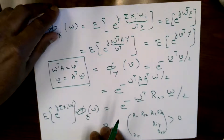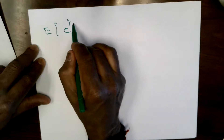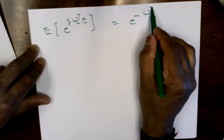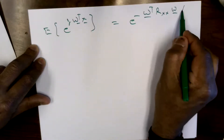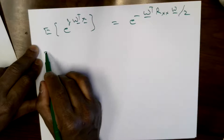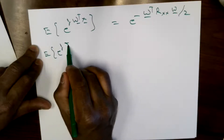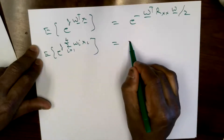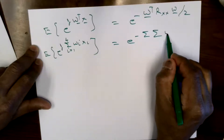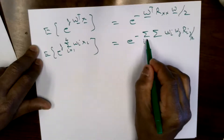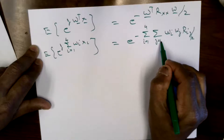Let me start with this expression: E[e^(j ω^T x)] = e^(−ω^T R ω / 2). Let me expand both sides. The left side is e^(j Σ ω_i x_i) for i = 1 through 4. The right side is e^(−(1/2) Σ_{i,j} ω_i ω_j r_{ij}) where i and j go from 1 through 4.